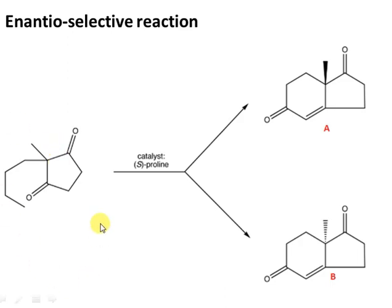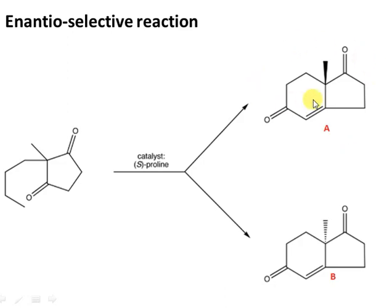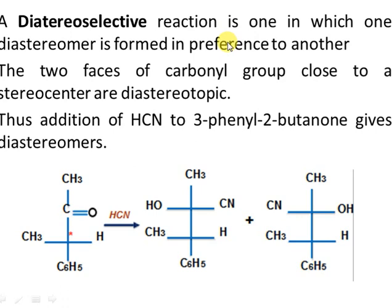This starting molecule does not have a defined chiral center — it is a racemic molecule. When we carry out the aldol condensation in the presence of the chiral catalyst S-proline, we get two enantiomers — since there is only one chiral center in the product. Enantiomer A is formed in much larger excess, so its enantiomeric excess is higher than that of enantiomer B. Since the reaction favors formation of one enantiomer, this is considered an enantioselective reaction or asymmetric synthesis.